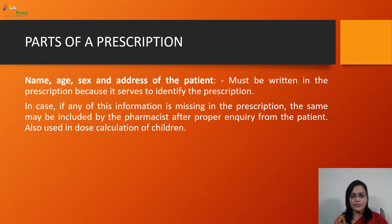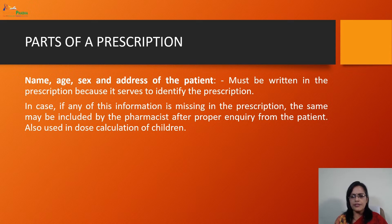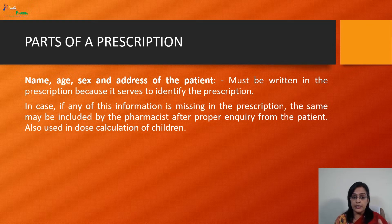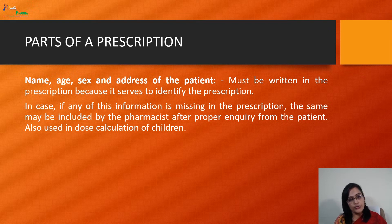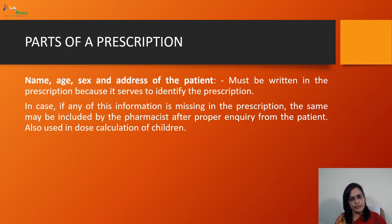Next is the name, age, sex and address of the patient. If any of this information is missing, it can be very difficult for the pharmacist to calculate the dose, because doses may differ based on the age and sex of the patient. Doses are different for males and females sometimes, and for children we use different doses as prescribed by the prescriber. All this information must be written on the prescription.